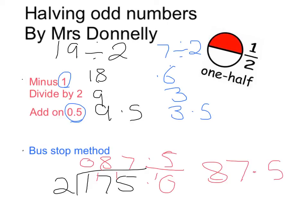So remember, for nice small numbers, you can minus 1, divide that by 2, and add on 0.5. And for larger numbers, use your bus stop method.